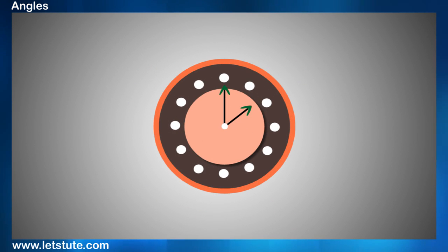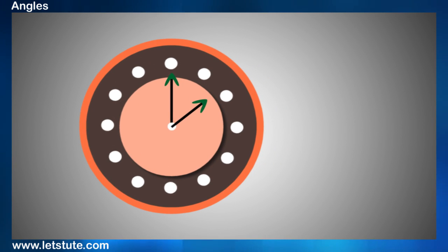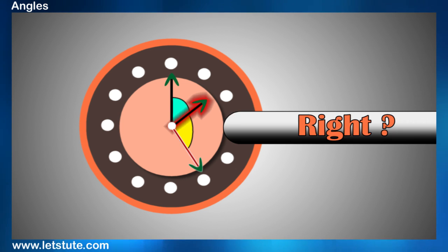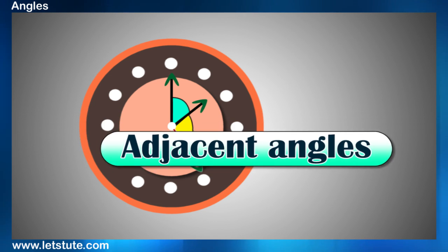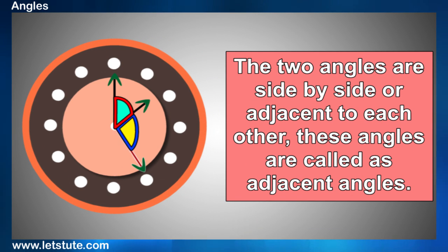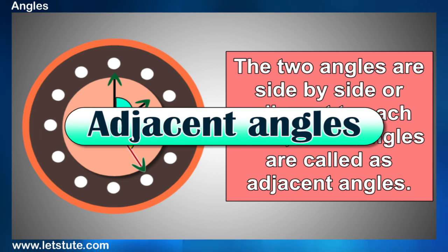If we see the clocks, there were only two hands. So let's take a watch with the third hand also. Now here we can see two angles, but they have a common arm. Right? And these type of angles are called as adjacent angles. Now, just because the two angles are side by side or adjacent to each other, these are called as adjacent angles.